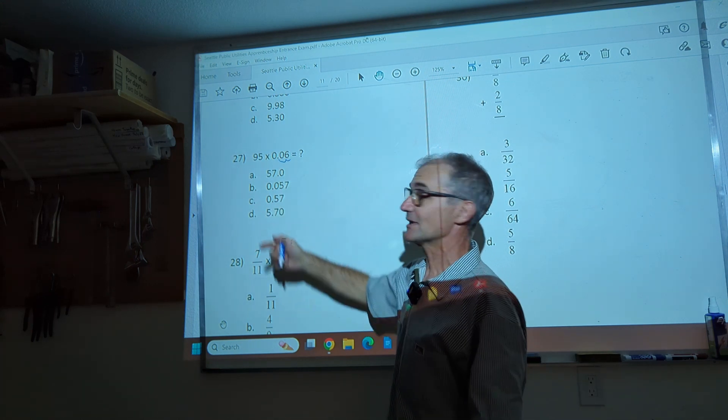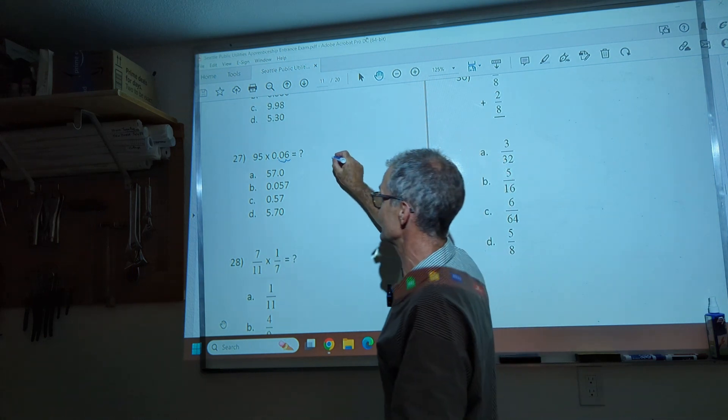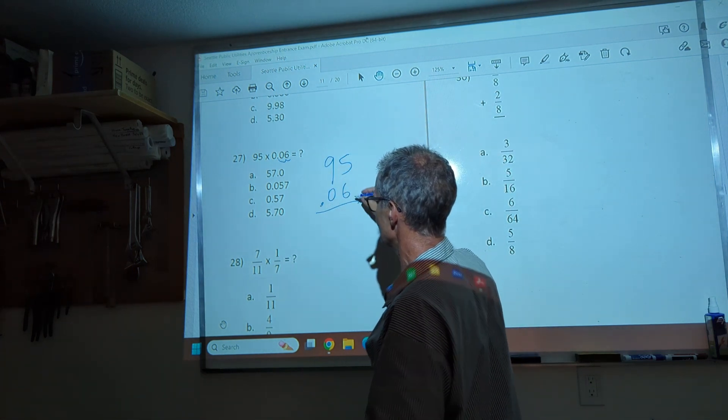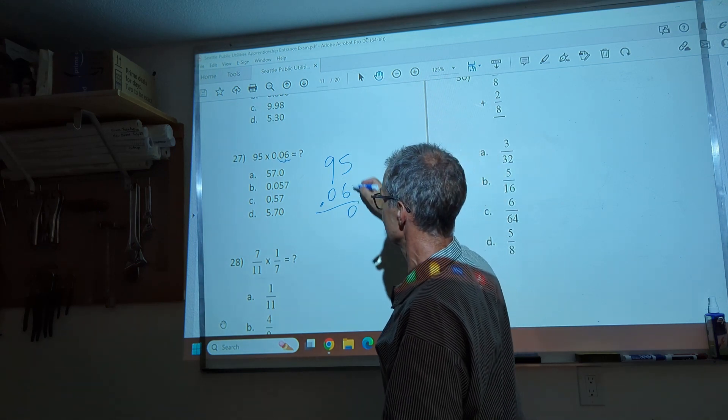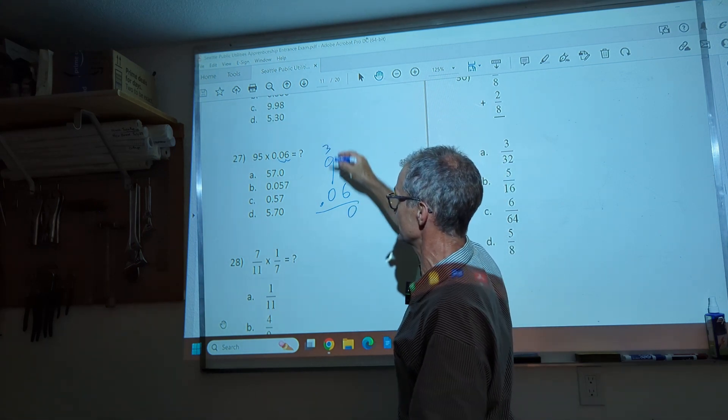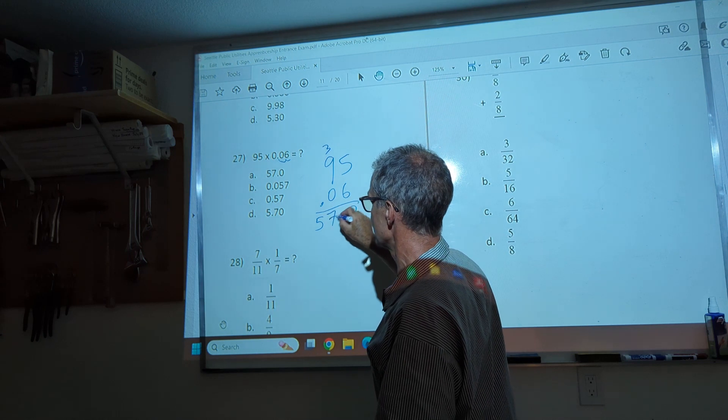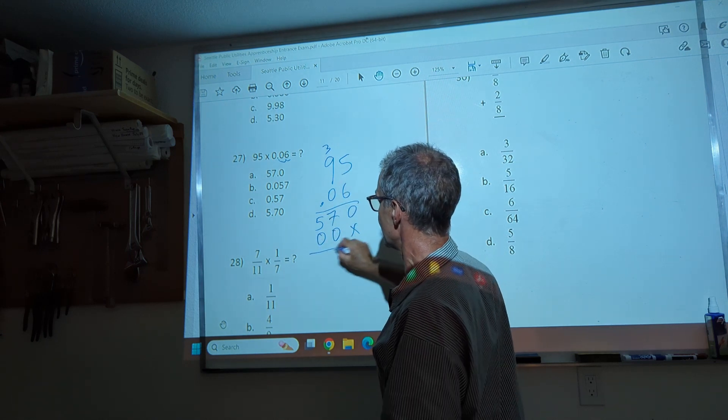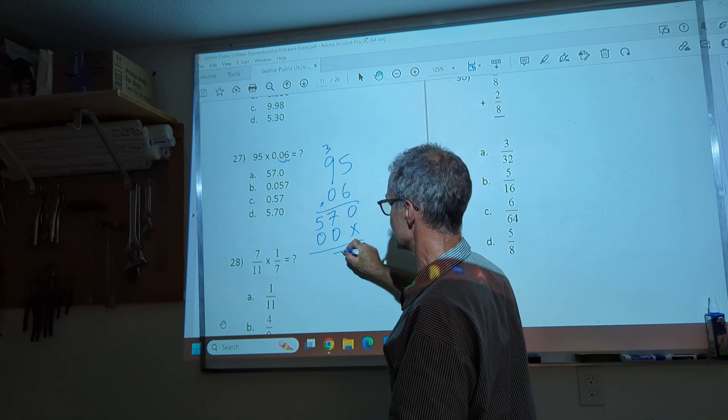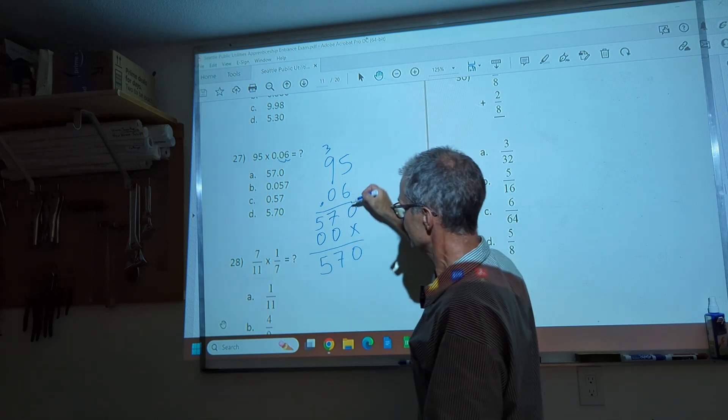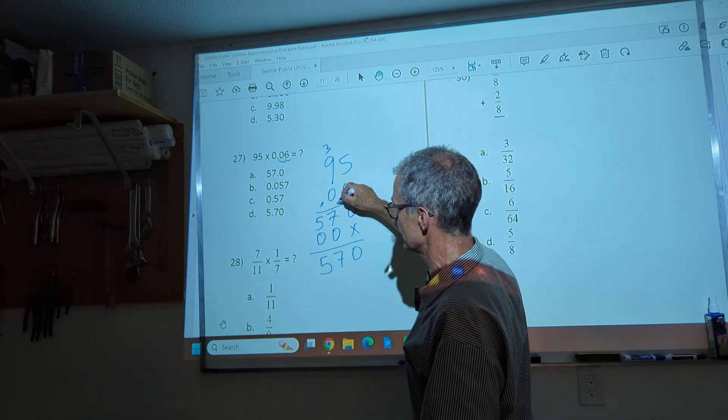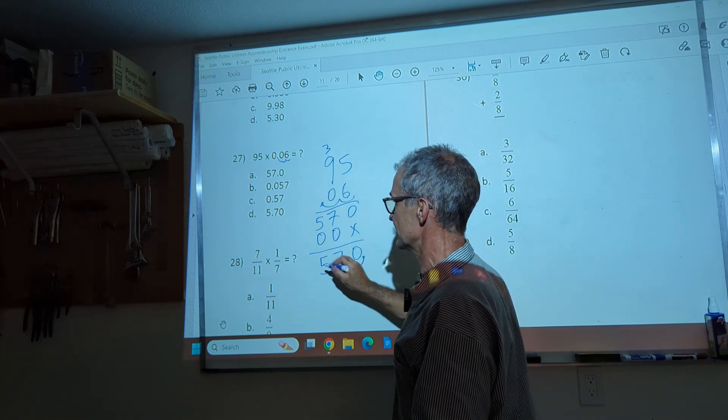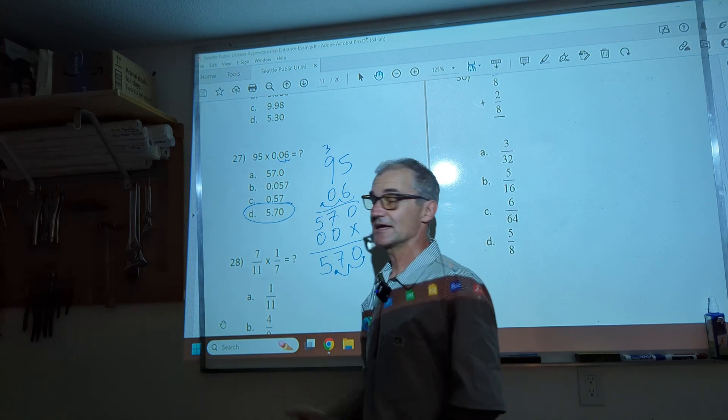But to learn how to multiply decimals, I'll multiply it out. So I have 95 times 0.06. I multiply this together. 30, carry the 3. 54 and 3 is 57. I have a placeholder, 0, 0. I add down to get 0, 7, 5. My decimal place is over 1, 2 places. So I go over 1, 2. And I get that 5.7. Answer D.